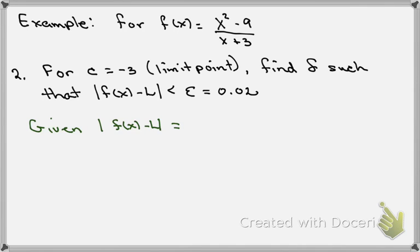In the second part of the problem, recall that we're asked to find the δ such that the absolute value of f(x) - L is less than ε, which we've been asked to set epsilon in this particular problem to be 0.02.